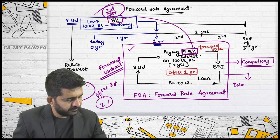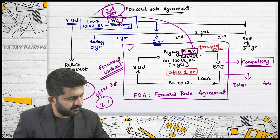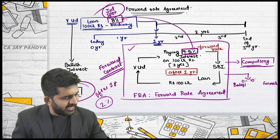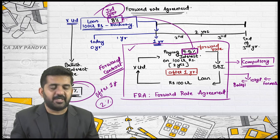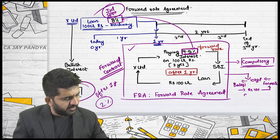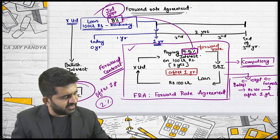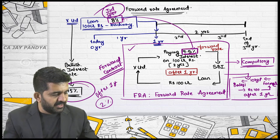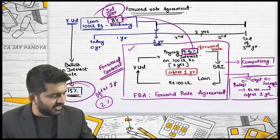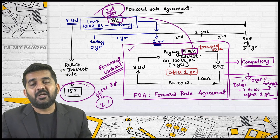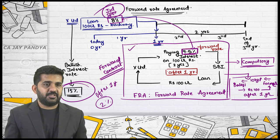Let me write down a classic forward contract for comparison. Balaji and a farmer: Balaji will be purchasing 10 kgs of potatoes from farmer and will be paying rupees for it after one year. This is the classic forward contract example. Believe me, these two contracts are the same. Here the underlying asset is potatoes; in the FRA, the underlying asset is interest rate.